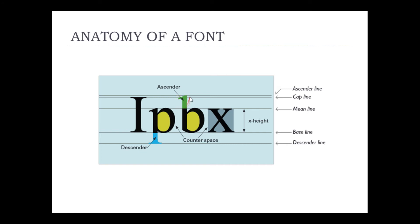Descender is the portion of an alphabet that goes below or extends downwards from the x-height of an alphabet — just like this highlighted area. We can see this highlighted area goes below or extends downwards from the x-height. So basically we discussed ascender and descender here.